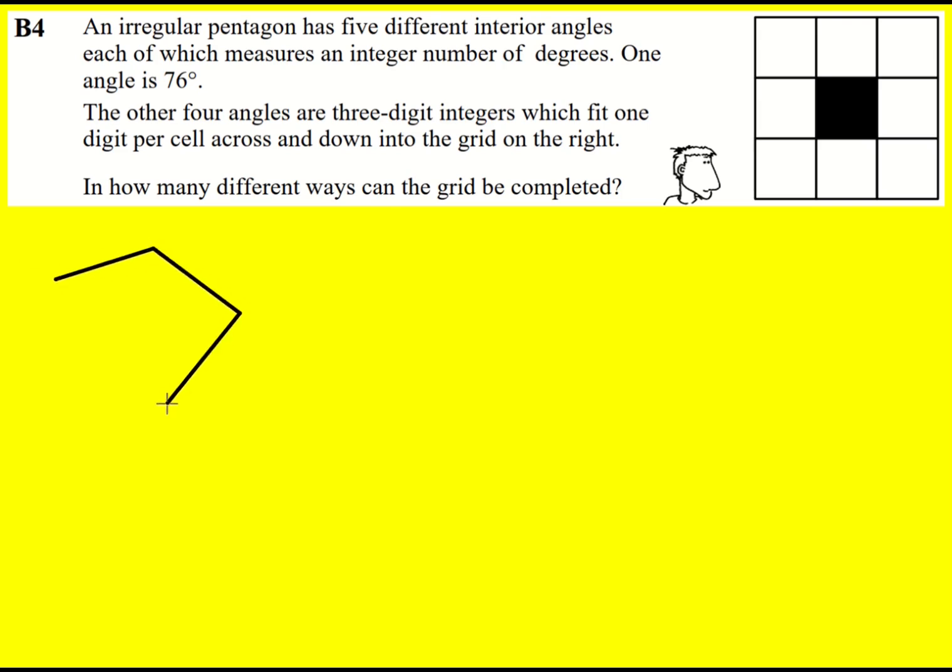I'm just going to sketch this irregular pentagon out. Now we're told that one of the angles in it is 76 degrees, and we want to find the other angles, noting that they have to be different, they have to be three-digit integers, and they have to fit into this grid.